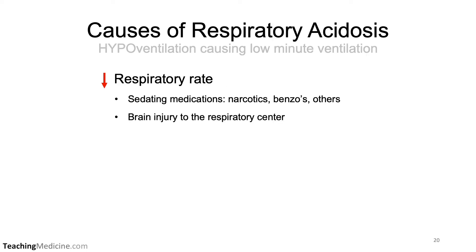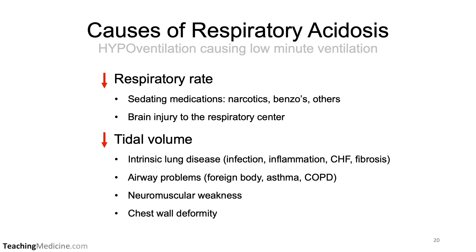Causes of respiratory acidosis are the same as the causes of hypoventilation, resulting in low minute ventilation. A low respiratory rate — from sedating medications such as narcotics or benzodiazepines, or brain injury to the respiratory center — will cause low minute ventilation. A low tidal volume can also be the cause: intrinsic lung disease such as infection, inflammation, heart failure, or fibrosis; airway problems such as a foreign body, asthma, or COPD; neuromuscular weakness; or chest wall deformity.